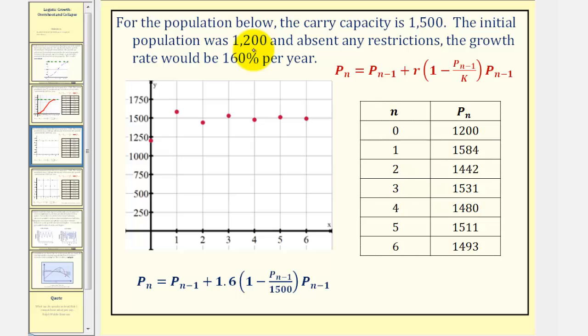And absent any restrictions, the growth rate would be 160%. So of course, this will affect the recursive logistic growth equation given here, which we see here below, with the growth rate and carrying capacity substituted into the equation.